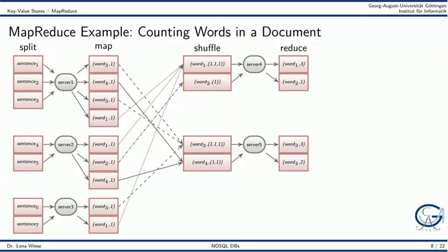A typical application for MapReduce is word counting in a document. The input document consists of sentences. Each sentence is assigned to a server in the split process. Next, the map function can run in parallel on each server. For each word in a sentence, it outputs the word as the key and the one bit as the value. In the shuffle step, we group the intermediate results by words. The value part is now a list of one bits. Word groups are then assigned to other servers. Lastly, the servers execute the reduce operation in parallel. They sum up the one bits for each word to achieve the entire word count.